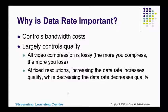So why is data rate important? Number one, if you're a high-volume producer — say a CNN or an ESPN — data rate controls your bandwidth cost. The more data you send with each file, the more you pay in bandwidth cost every month. For most producers, data rate is important because it largely controls quality. Basically, all video compression is lossy, which means the more you compress, the more you lose. At a fixed resolution, if you increase the data rate you get better quality, and if you decrease it, you get worse quality. Data rate is the single most important factor in overall streaming video quality.